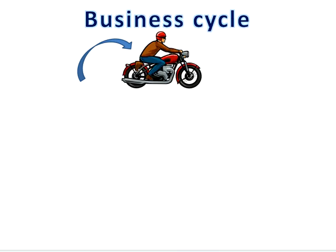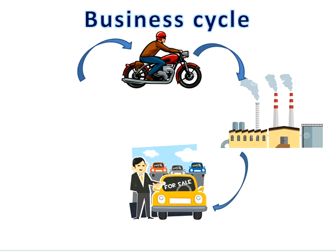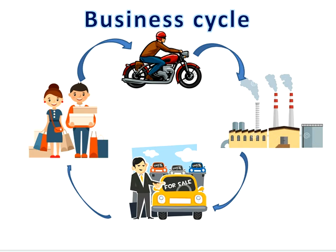Consider a business cycle as below. When there is a demand for any product, the companies are going to manufacture, so this creates employability for many. If the customer is not willing to buy or spend money, that results in economic slowdown.